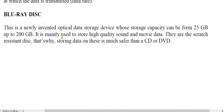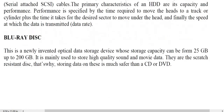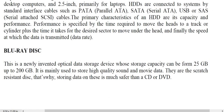Blu-ray disc is a newly invented optical data storage with a capacity ranging from 25 GB up to 200 GB. It is mainly used to store high-quality movie data. Blu-ray discs are crash-resistant, making data storage safer than CD and DVD. That's all about computer memory and the different types of memory. Thank you very much.